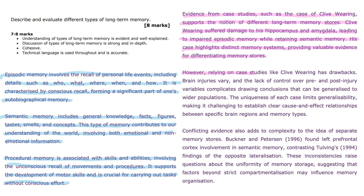However, relying on case studies like Clive Wearing has drawbacks. Brain injuries vary, and the lack of control over pre- and post-injury variables complicates drawing conclusions that can be generalised to wider populations. The uniqueness of each case limits generalisability, making it challenging to establish clear cause and effect relationships between specific brain regions and memory types.